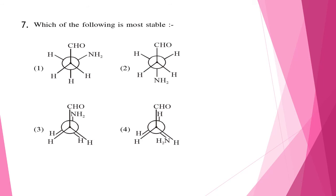Question seven: which of the following is most stable? In such questions, most students attempt it incorrectly. The correct option is option one because there will be H-bonding between the hydrogen and oxygen, making it more stable. Don't get confused between option one and option two — people usually tick option two as they see CHO and NH2 oppositely placed, but H-bonding makes option one correct.